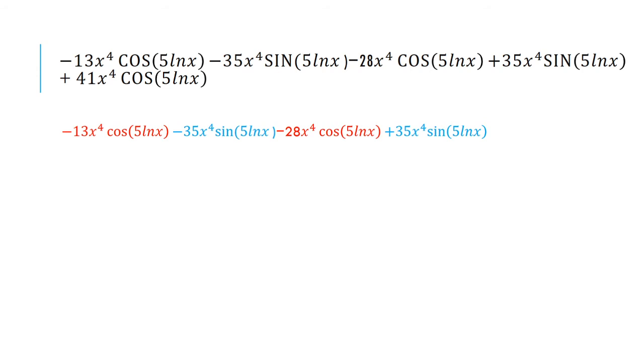Because now I want the x to the fourth cosine 5 ln of x to be together. But I'm going to leave the last one, the 41x to the fourth cosine 5 ln of x, by itself. So I'm taking an extra step to simplify. And then I'm going to put the x to the fourth sine 5 ln of x together as well in blue.